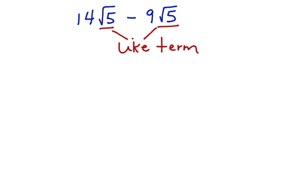Because it's a like term, we don't have to do anything with it when we add them. We can just bring the square root of 5 over into the answer. Now we can work with the 14 minus 9, which is 5. 5 square roots of 5 is our answer.